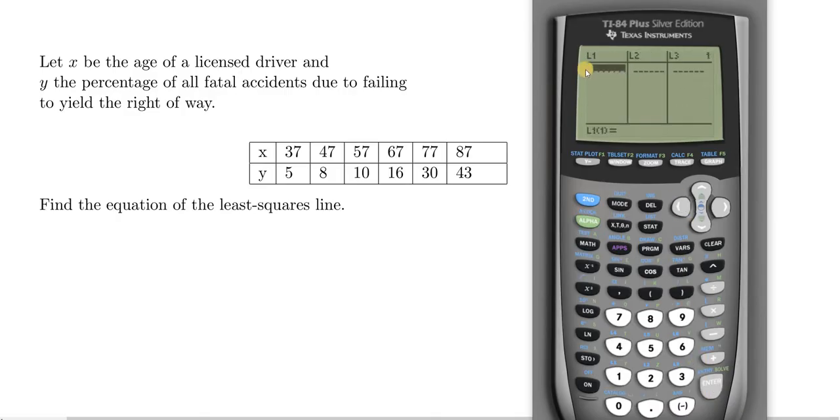And I'm gonna go here to this list and type all the data in. So we have 37, 47, 57, 67, etc. So 37, enter 47, enter 57, 67, 77, and then 87.